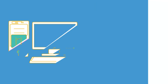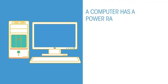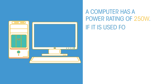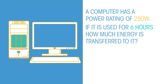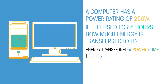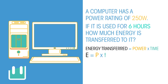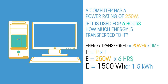Let's look at an example. A computer has a power rating of 250 watts. If it's used for six hours, how much energy is transferred to it? Can you substitute the values into our equation? Pause the video and work it out. Did you get 1500 watt hours or 1.5 kilowatt hours?